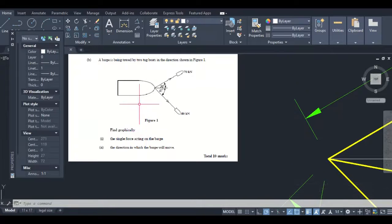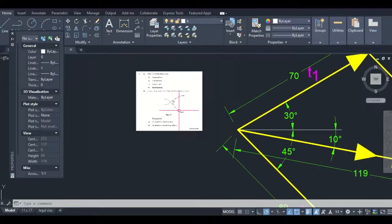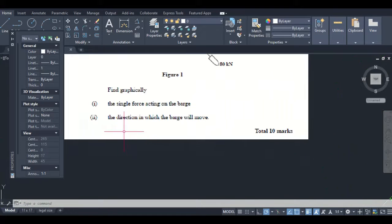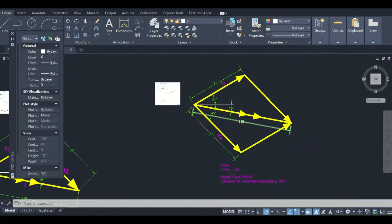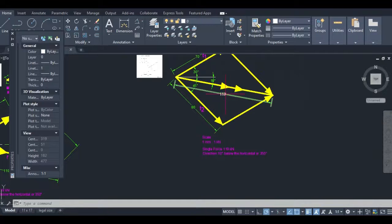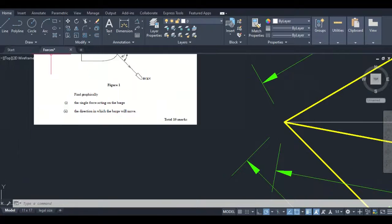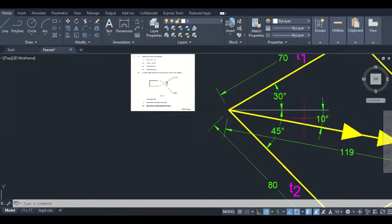So it's the same question. Remember, we have the barge being towed by two tugboats. We named this one T1, this one T2, and that was 30 degrees, 45 degrees. We're seeing that the question asked us to find graphically the single force acting on the barge, and this is it: 119 kilonewtons. And the direction in which the barge will move, and we're seeing that it would move 10 degrees to the horizontal.